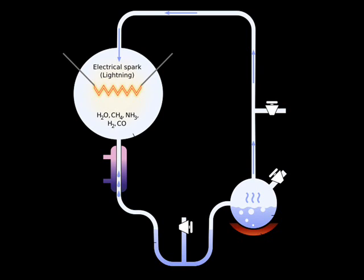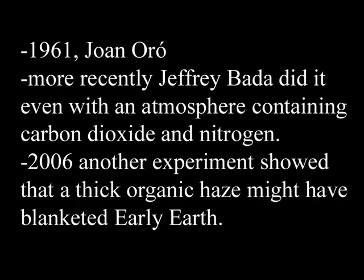What Miller did was take water, methane, ammonia, and hydrogen, put them in the setup shown on screen, ran some electricity and heat through it, and after two weeks he produced many organic compounds, including amino acids. In fact, this experiment was repeated several times. In 1961, Joan Oro found amino acids could be made with hydrogen cyanide and ammonia. Some of the organic compounds created included adenine, which is a nucleotide base.